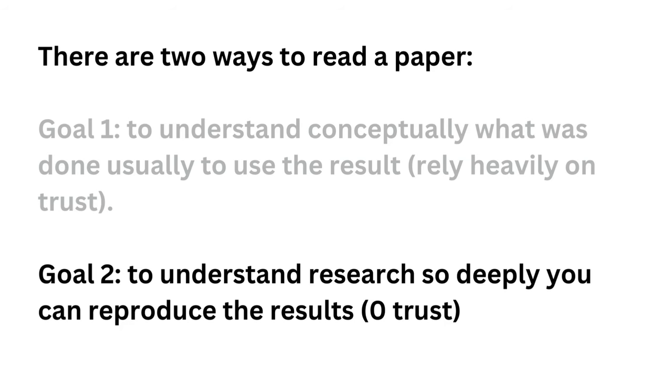The second way to read a paper is where people get lost. The goal is to understand a research project so deeply that you can reproduce these results. In that setup, there is little trust, and you actually need to understand the paper's methods. This way of reading paper is what I'll be covering today.